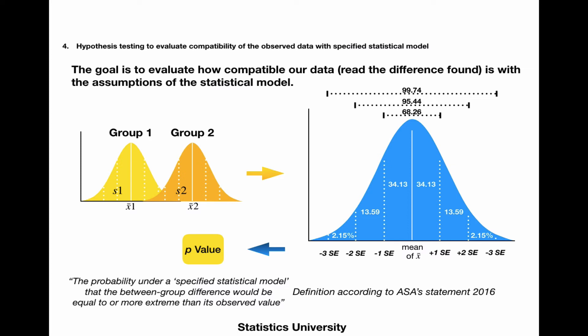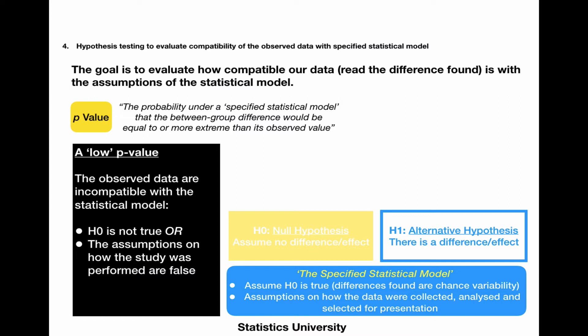Now, let's say we find a very low p-value, what does that actually mean? It simply means that the observed data are incompatible with the statistical model. And from that, you can either conclude that the null hypothesis is not true, or the assumptions on how the study was performed are false.